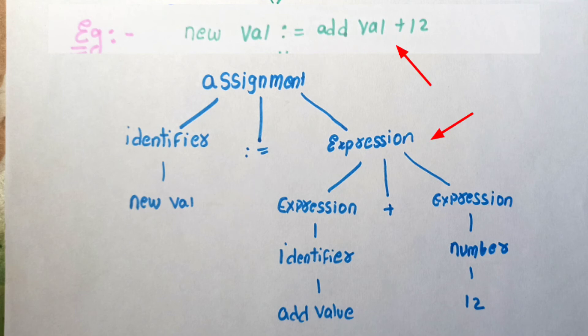The expression is at the bottom. Old val plus 12 forms an expression. This expression has old val as an identifier and 12 as a number. The identifier is old val, and the number is 12.